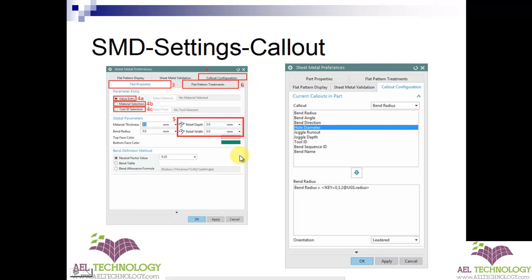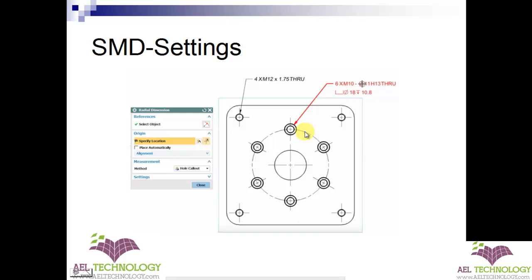Next setting is color configuration. Color configuration is used to define which parameters you want to show while you are doing the detailing of that component. For example, I have set hole diameter to be easily called out during detailing. When you select the feature, the callout node appears automatically — it becomes very handy and all the callouts will come automatically.